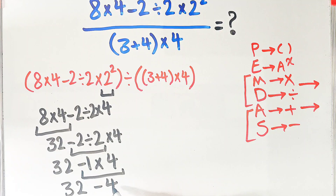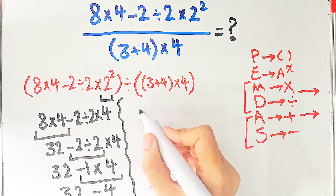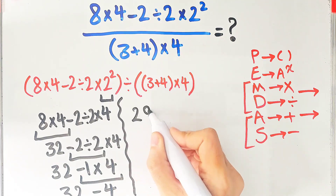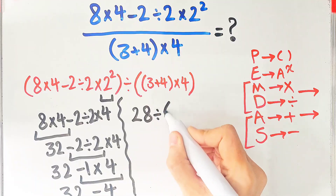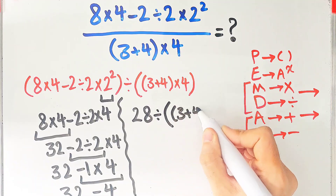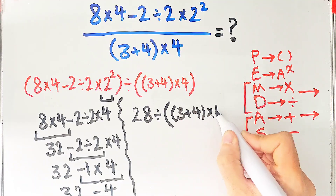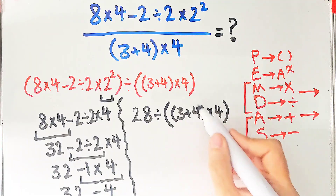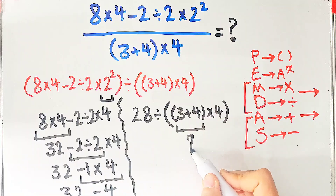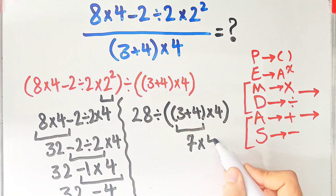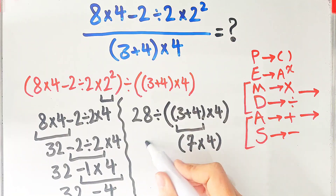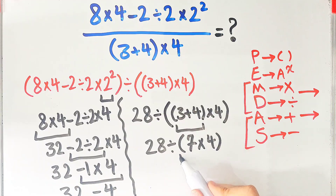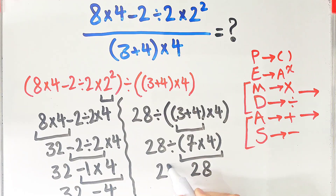Now we have twenty-eight divided by the result of the second part. First we simplify the parentheses: inside we have three plus four which equals seven, then seven times four equals twenty-eight. So twenty-eight divided by twenty-eight equals one. The final answer of this question equals one.